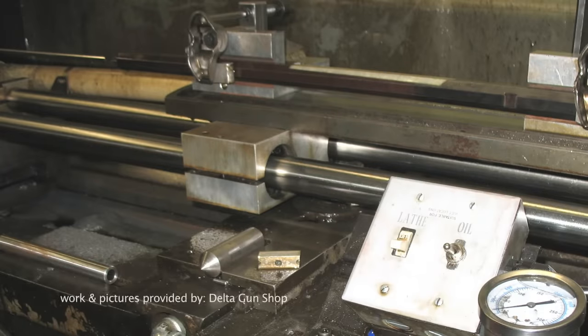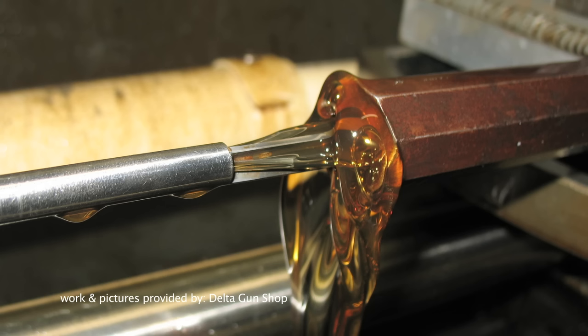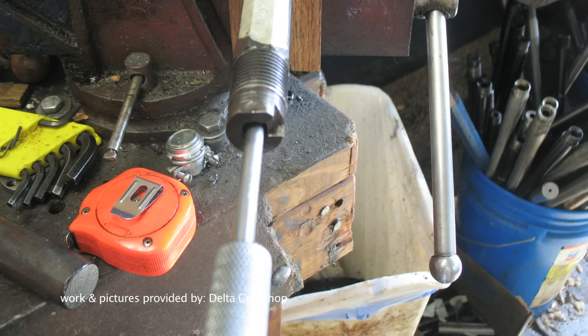First the bore is drilled and reamed for the larger diameter, in this case from 32 to 35 caliber, after which it's hand lapped to remove all of the reamer marks.